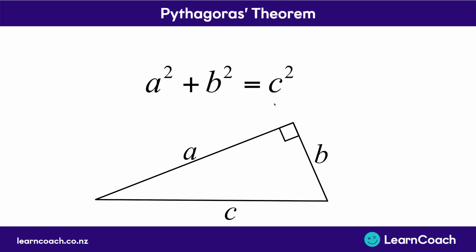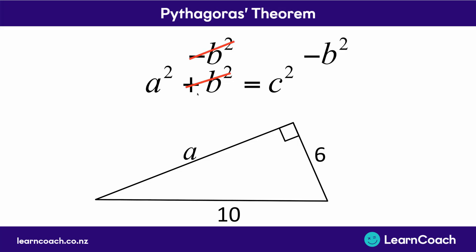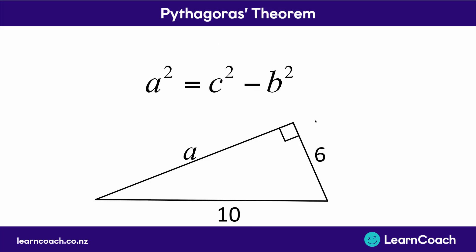We know our formula: a squared plus b squared equals c squared. So let's see if we can solve a problem finding one of the short lengths using that same formula. Say b was 6 and c was 10 and I want to find a. The first thing I want is a squared equals, so I take b squared off both sides. That means the two b squareds cancel out and we're left with a squared equals c squared minus b squared.